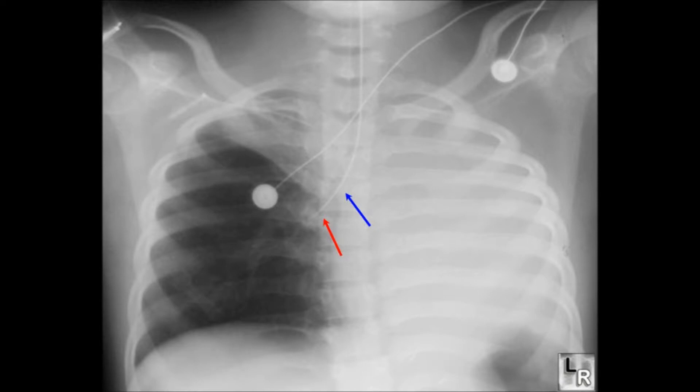The answer is C. Louder breath sounds over the right chest wall indicate that the endotracheal tube may be misplaced in the right mainstem bronchus, meaning only one lung is being mechanically ventilated.